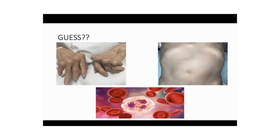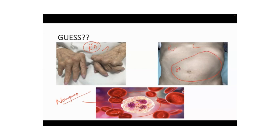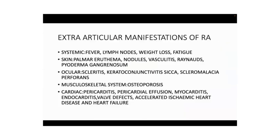Here is an image of rheumatoid arthritis with the classic deformities. This next image shows neutropenia — think of Felty's syndrome. Here is a splenomegaly on the left side — this is your classic Felty's syndrome. Just a quick quiz: the combination of rheumatoid arthritis, neutropenia, and splenomegaly is Felty's syndrome.